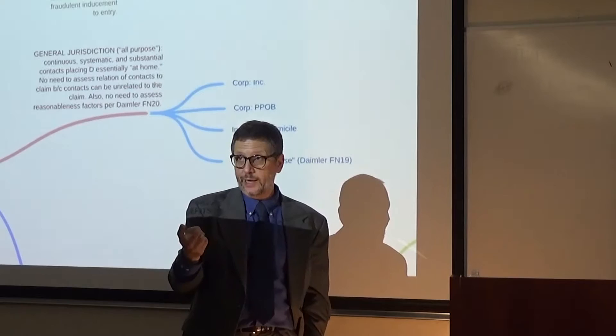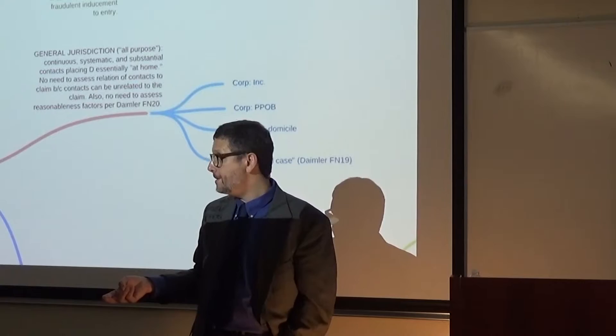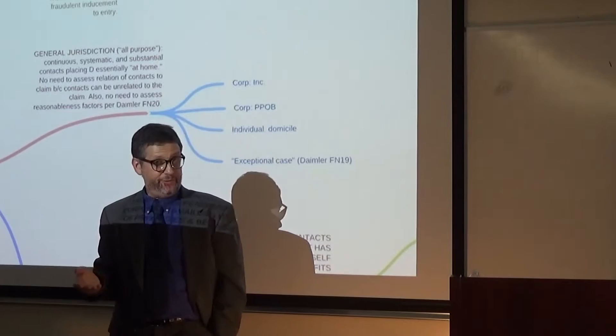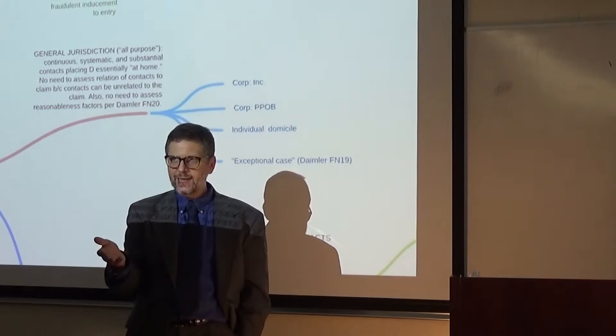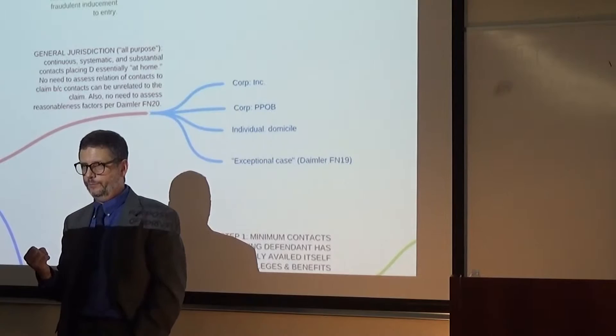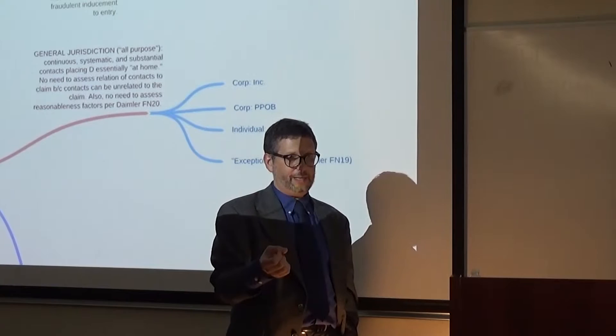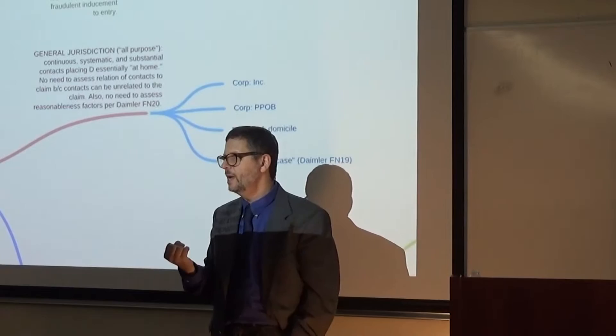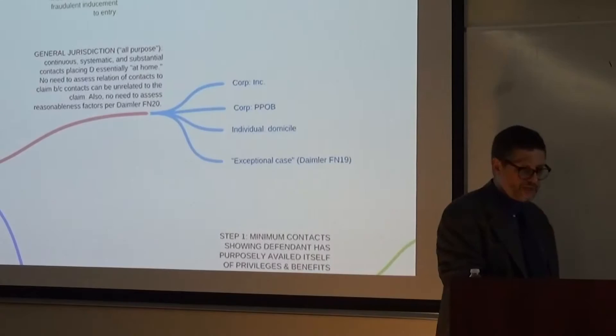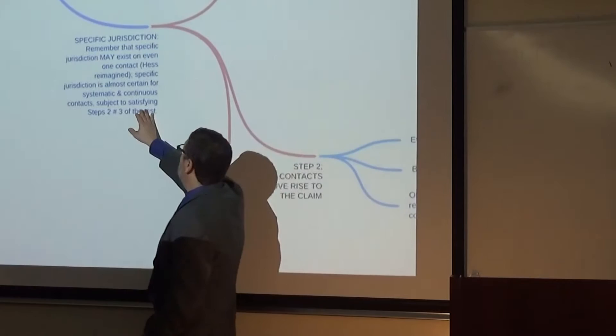So systematic and continuous and essentially at home. In the Goodyear and in the Daimler case, the Supreme Court said that normally for a corporation that's going to be two places. Any place where it's incorporated and its principal place of business. Second, for individuals, it's typically going to be where they are domiciled. The court had a kind of escape clause in footnote 19 of the case and said in exceptional cases there can be other places. But I think that's going to take a really exceptional strong case where there's some other place where you're still really at home. So you're not going to have general or all purpose jurisdiction over a person or a company unless it's their place of domicile, place of incorporation, the principal place of business, or some other place that's so similar to those other places that defendant's essentially at home. It's really hard to satisfy general jurisdiction these days.